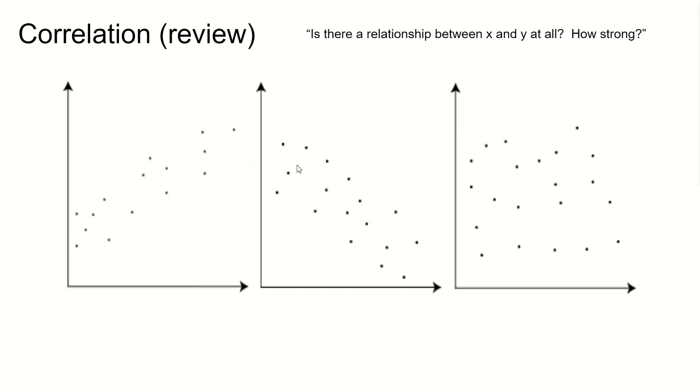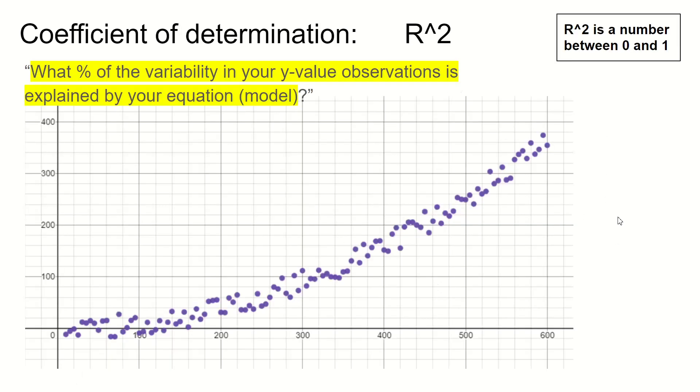So real quick, if you want to say out loud, approximately what R value would you give to each of these graphs? I think I'd probably estimate this one to be maybe 0.3, maybe negative 0.3, maybe 0. Seems about right.